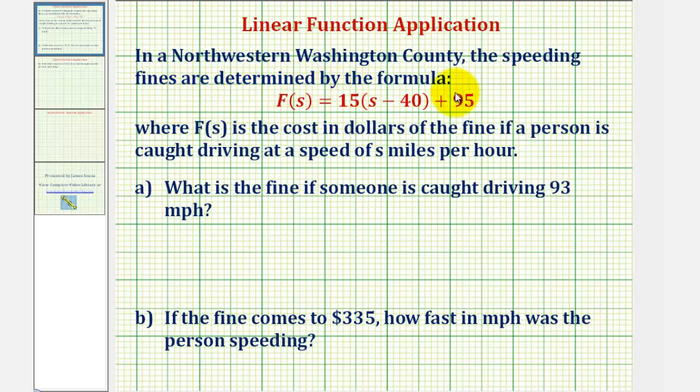In a northwestern Washington county, the speeding fines are determined by the formula f of s equals 15 times the quantity s minus 40 plus 95, where f of s is the cost in dollars of the fine if a person is caught driving at a speed of s miles per hour.